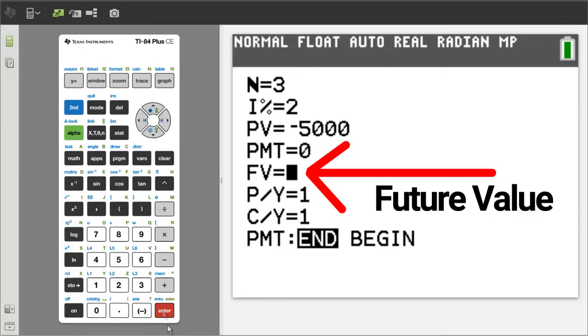FV is Future Value. That is what we are solving for. How much money we will have at the end of 3 years compounding annually.